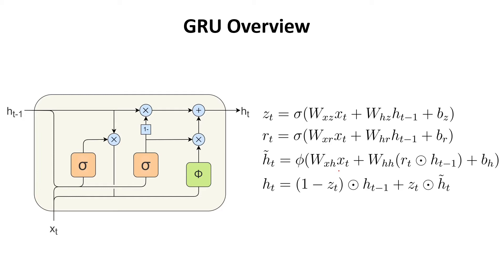So here on the left we have the general design of the gated recurrent unit and how it looks inside and what its operations are. The symbols here are mostly the same as in the LSTM unit. We have sigma, which stands for a neural network with a sigmoid activation function, and phi, which is a neural network with a tanh activation function. We also have addition of two vectors and element-wise multiplication.